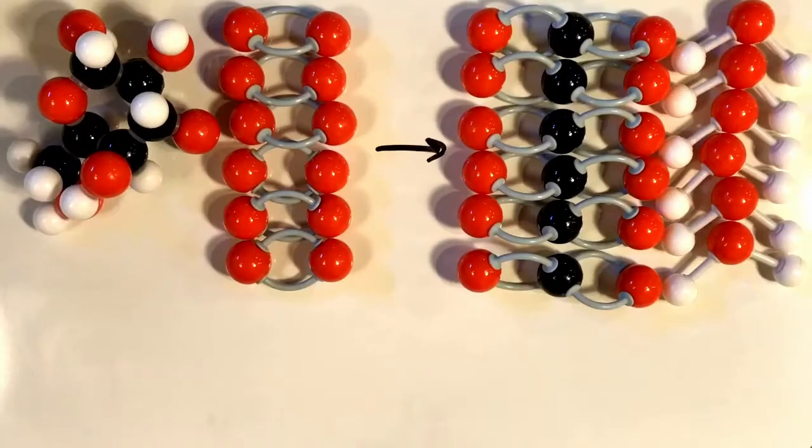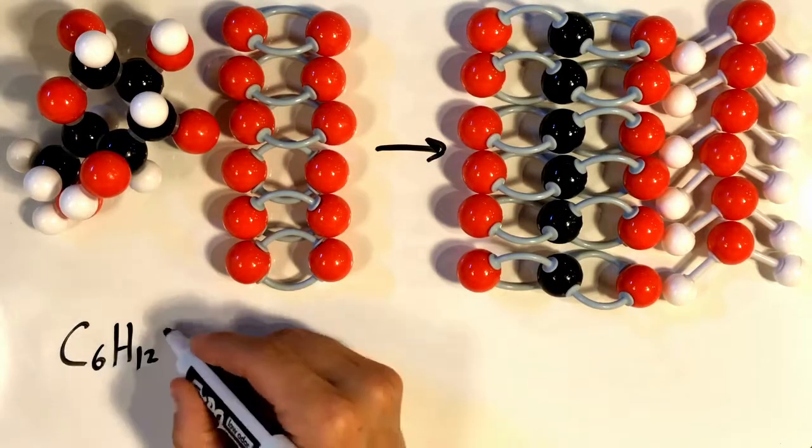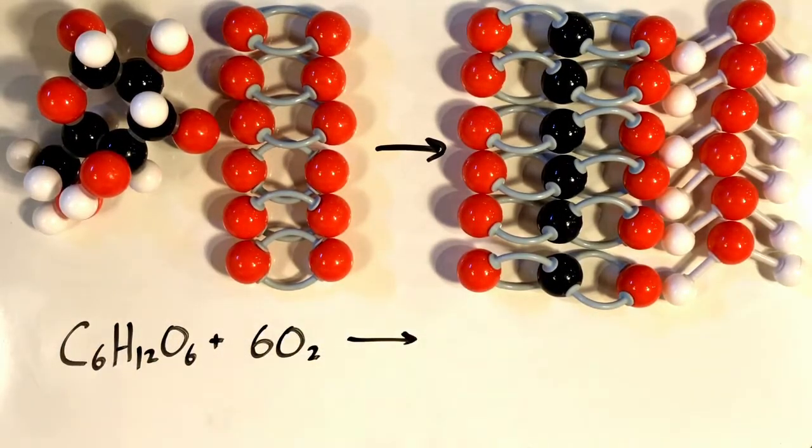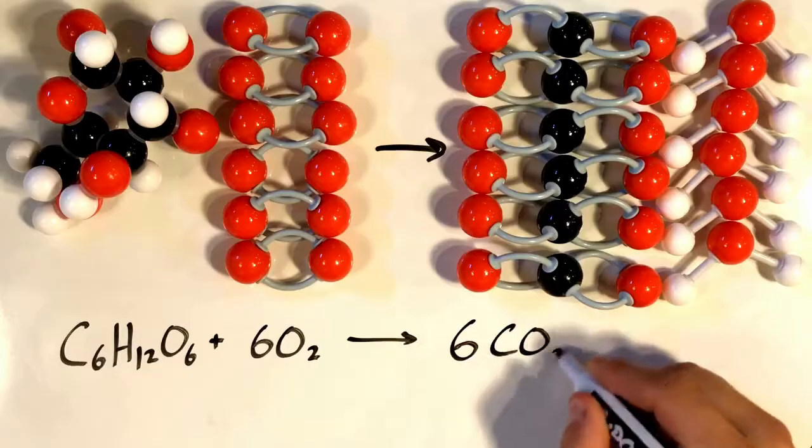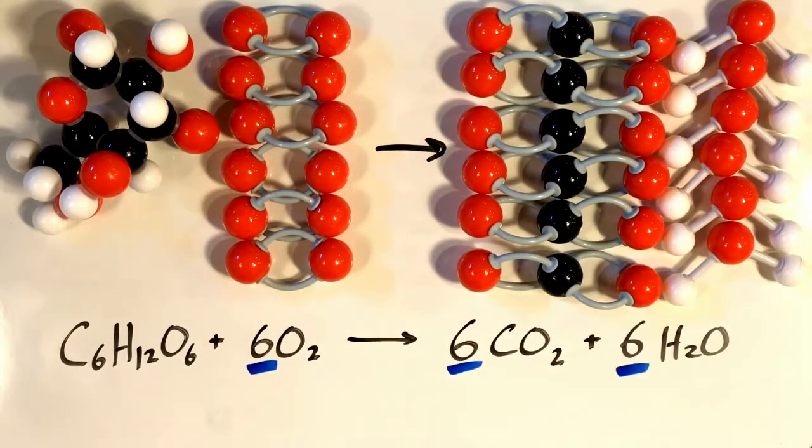And there's one more way to write out our balanced reaction. We can use what are called coefficients to show how many of each molecule there is in this reaction. In this case, oxygen, carbon dioxide, and water all have the coefficient of 6.